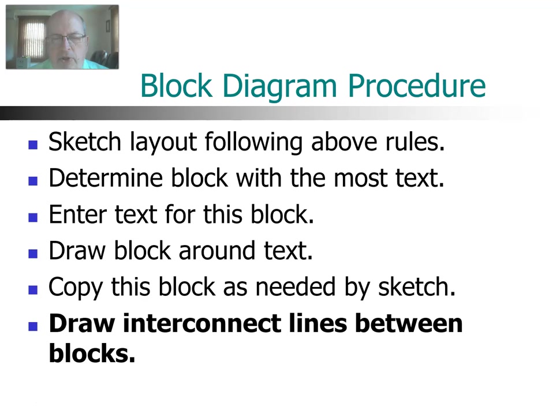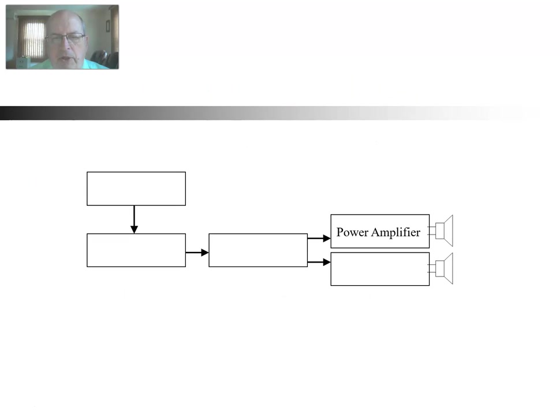Next thing you're going to do is draw your interconnect lines, your signal flow lines. They're actually arrows between the blocks. So there is my signal flow on this example.